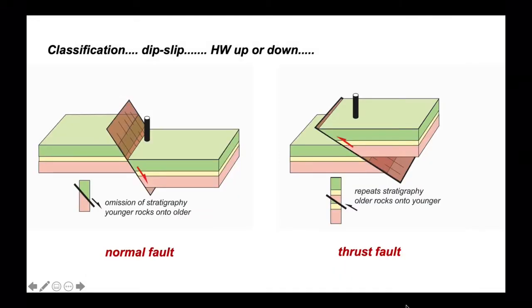We've got a classification of these dip-slip faults where the movement is up and down the dip direction of the fault plane. If the hanging wall moves up it's a thrust fault. If it moves down it's a normal fault and they make specific new arrangements to the stratigraphy as seen in boreholes.